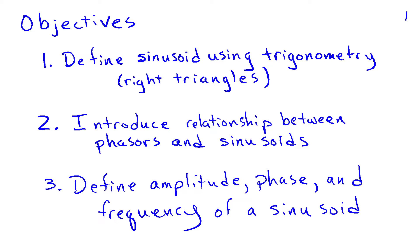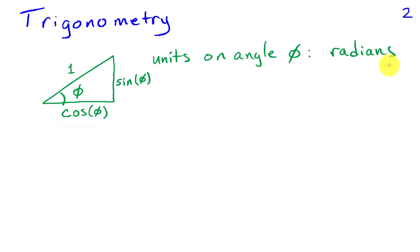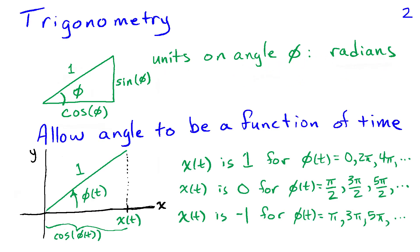Considering the right triangle shown here, if we have an angle of phi and a hypotenuse of unit length, then the horizontal leg is going to have length cosine of phi and the vertical leg is going to have length sine of phi. For the units on phi, we're going to use radians.